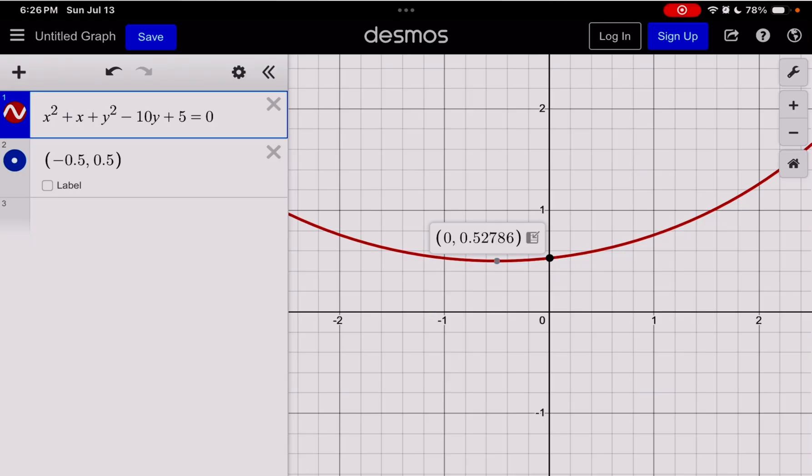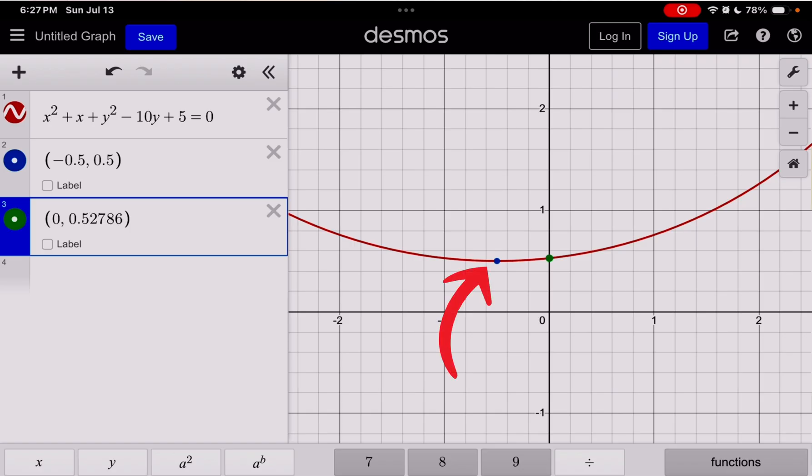And sometimes the SAT will purposely put the bottommost point so close to the y-intercept because they know students will use this Desmos trick and they might be lazy and select the wrong point. We only want to be selecting this one and not the y-intercept. Don't be lazy about this. Actually zoom in, figure out what is the highest and lowest points.